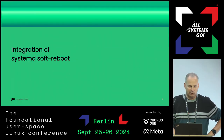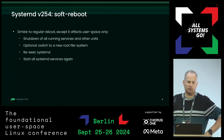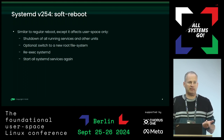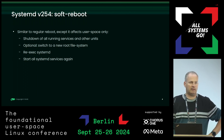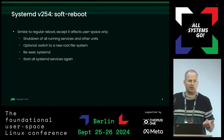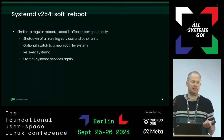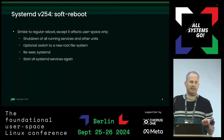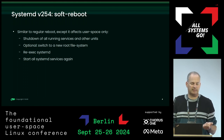I want to speak about how we integrated soft reboot in our distribution. systemd version 254 integrated the soft reboot. It's similar to a normal reboot, except it only affects the user space — it does not shut down the kernel and does not go through a full reboot cycle with hardware, BIOS, bootloader, kernel, and initrd. It just shuts down the old user-space processes. Optionally, you can mount a new root file system, switching from an A partition to a B partition during an update. Then systemd re-execs itself to start the new systemd, and after that all services start again like a normal reboot.